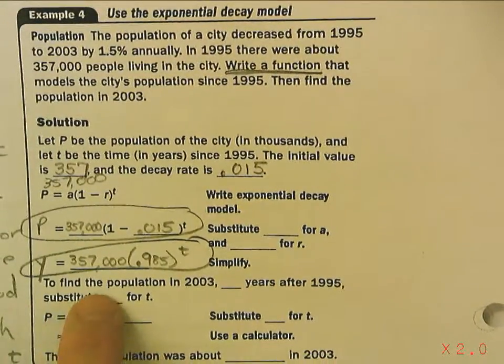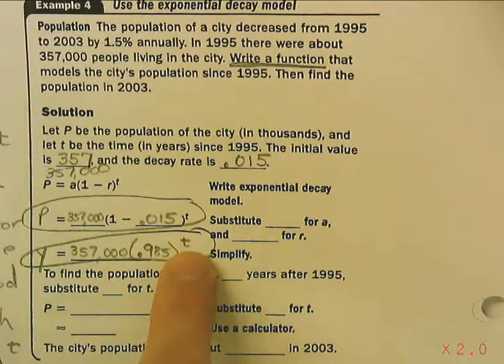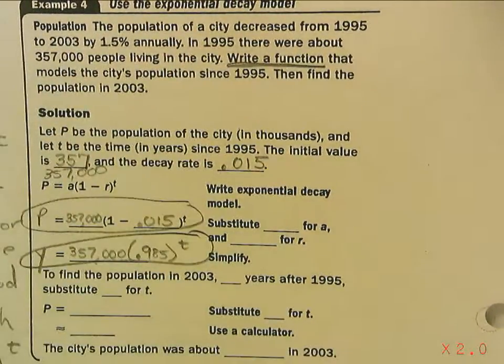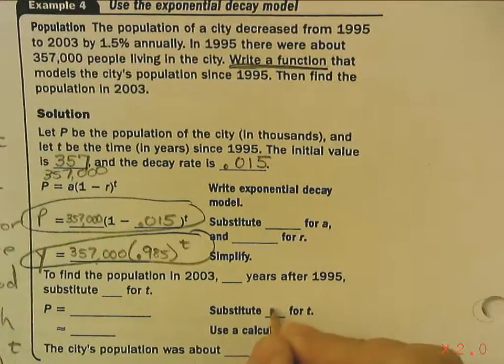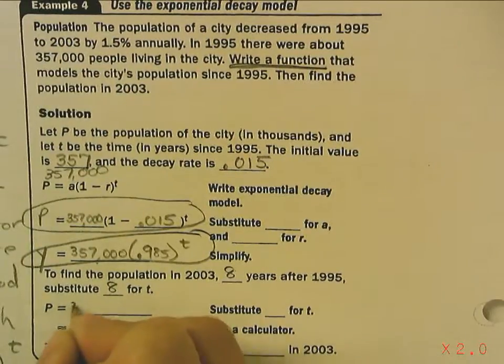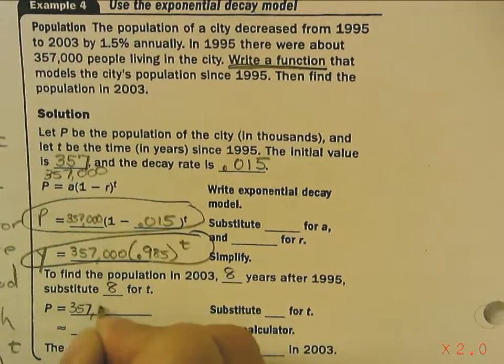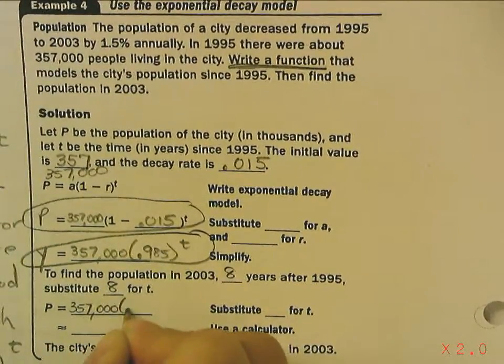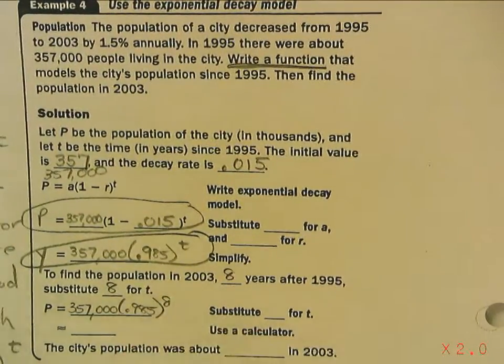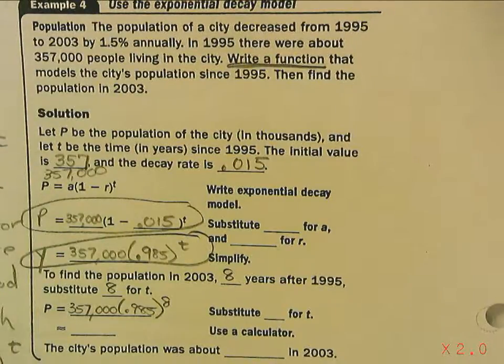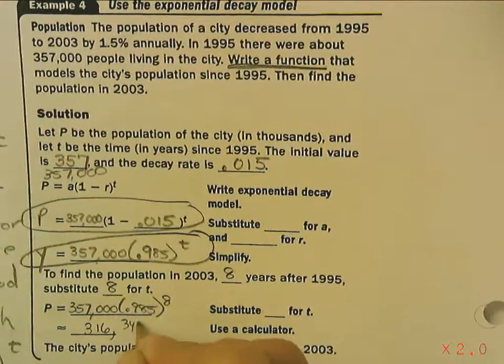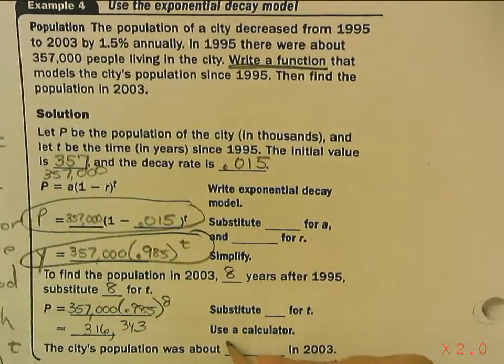Now, to actually find the population, we're going to substitute a value for t. Well, if we went from 1995 to 2003, that's eight years. So, we're going to substitute eight for t. So, we say 357,000 times .985 raised to the eighth. So, if we use a calculator, we'll get 316,343, and that would be the answer.